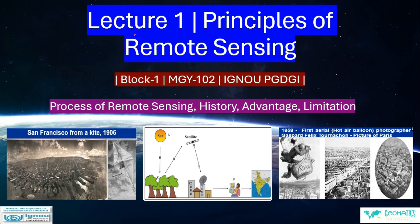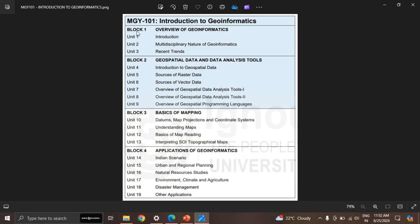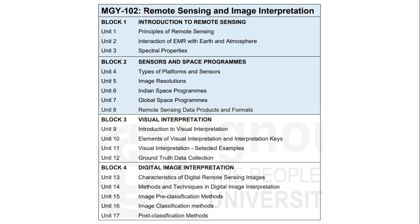Hello everyone, welcome back to my channel Geomatics Engineering. In today's lecture we are going to start MGY102 subject of this PGDGI course, where we will learn about the process of remote sensing, history, advantages and its limitations. As you all know, in earlier lectures we were covering MGY101 Introduction to Geoinformatics. For now I have started parallelly MGY102 also, where we will learn about remote sensing and image interpretation. Today's lecture is going to be about the principles of remote sensing.